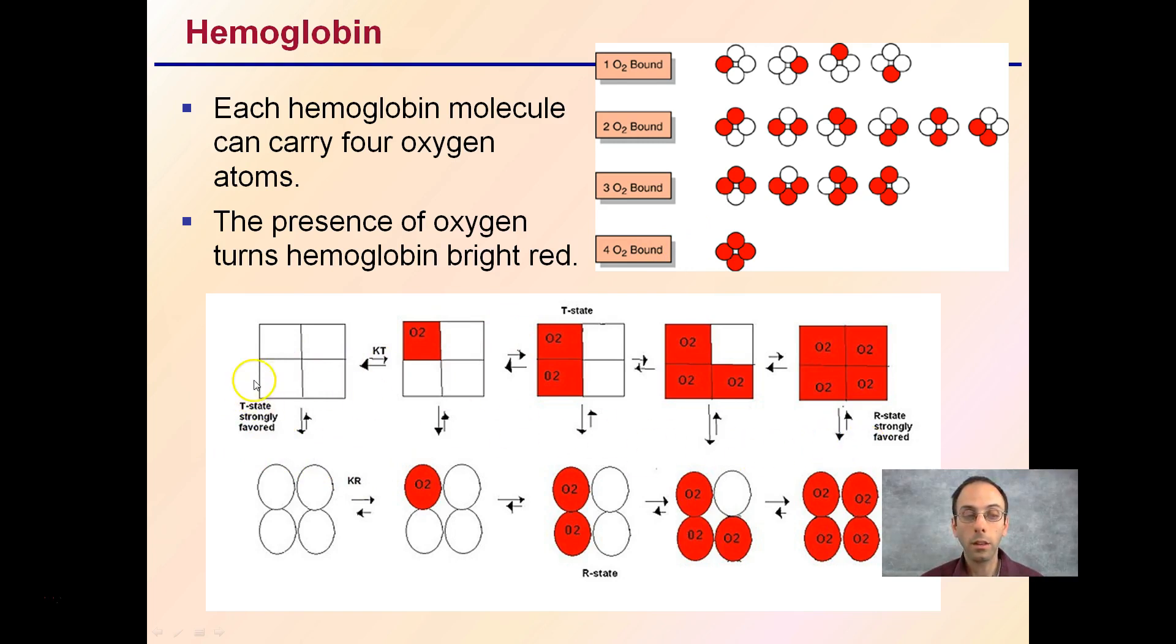Now T state and R state, T stands for tense state, R stands for relaxed state. So that relaxed state of fully four oxygen molecules being bound to that hemoglobin. Keep in mind, each red blood cell has multiple, many, many hemoglobin molecules. So that's what's allowing it to bind lots of oxygen and transport that to cells that are actively respiring.